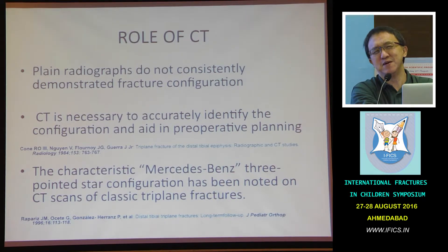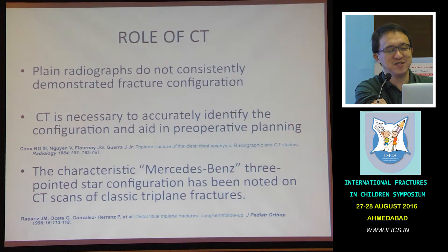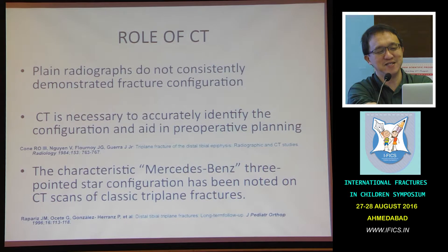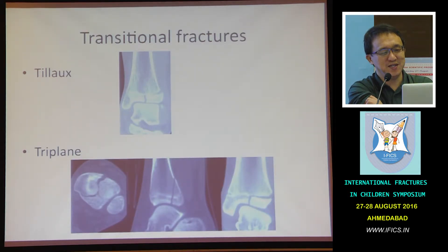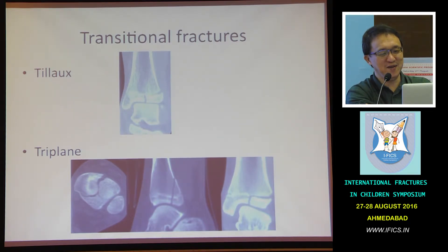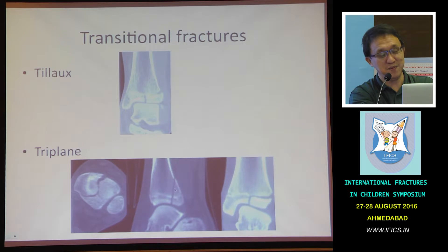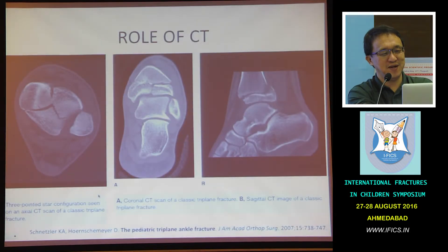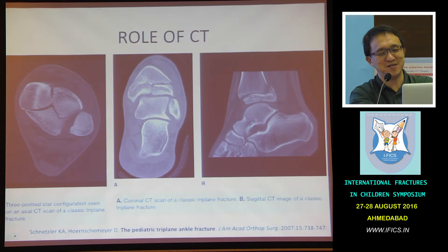Plain X-ray sometimes cannot show things very well, whereas CT definitely helps you plan your surgery. A lot of times you'll see this very characteristic Mercedes-Benz sign. On CT, Tillaux would look like that, and triplane — a lot of times you get type 3 on AP, type 2, and a bit more complex almost like a type 4 on a lateral view. Then you get to see this sort of Mercedes-Benz picture with three points. Remember always: 2 plus 3 equals 4.